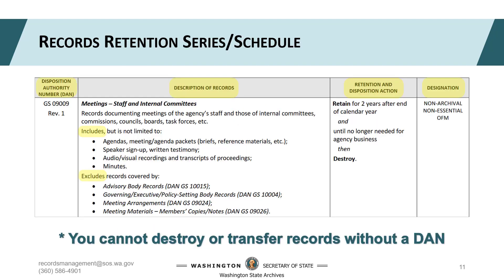This is a screenshot of one record series — meetings, staff, and internal committees — that you'll find in CORE and the State General Schedule. Retention schedules are lists of record types an agency manages, much like any list you create or use in your work. Each type of record has a disposition authority number, or DAN. DANs are unique identifiers that authorize the retention and disposition of a record. They distinguish one series from another and are important to include in inventories, box content lists, or disposition logs. The Description of Records field is where you can expect to spend most of your time — it describes the business function and type of record that falls under that DAN, including descriptions and examples of records included and excluded in that business process.